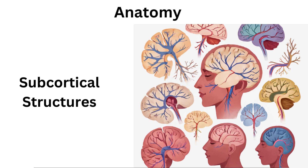Beneath the cerebral cortex are several important subcortical structures, including the thalamus, hypothalamus, amygdala, and basal ganglia, which all play distinct roles in various functions.